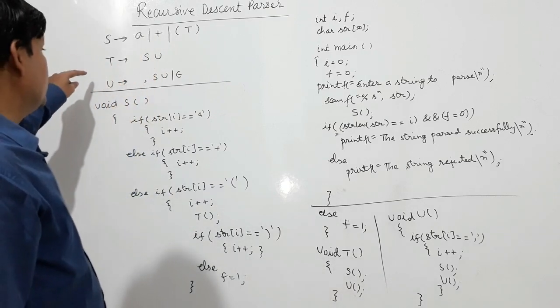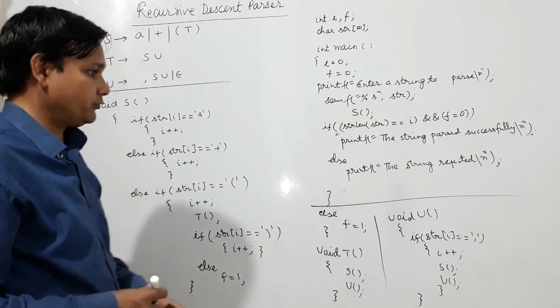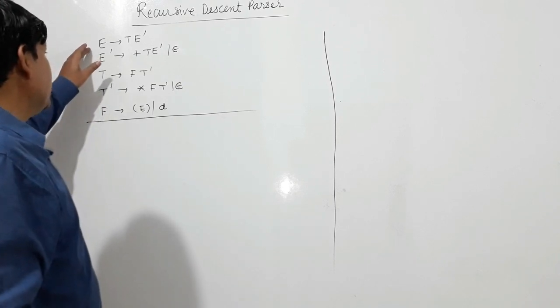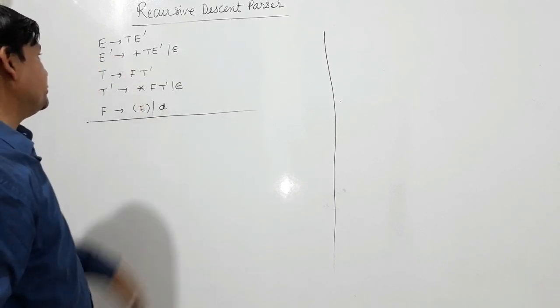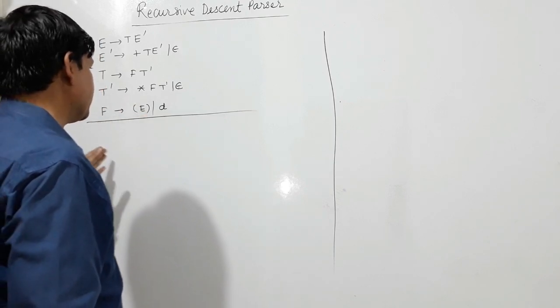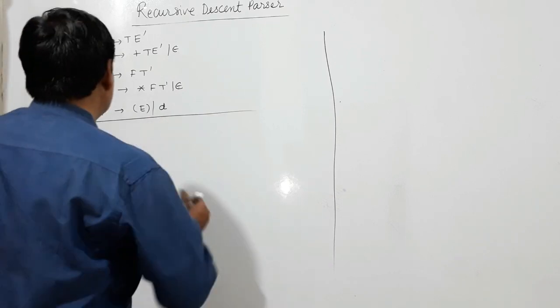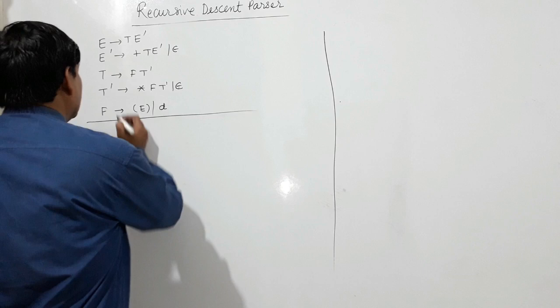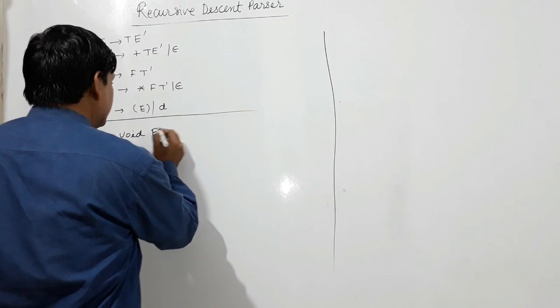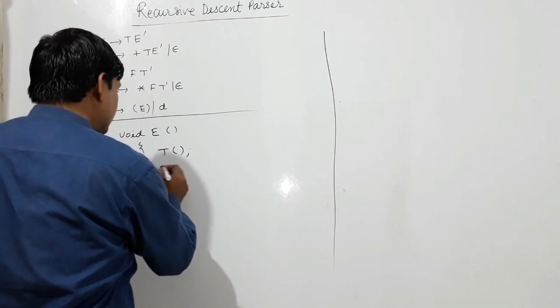One grammar is given: E produces T E dash, E dash produces plus T E dash or epsilon, T produces F T dash, F produces E or d. I'm using d as character a. So I'm writing procedures, functions in C. Functions in C where E, what E is doing, E is calling T and later it is calling ED.